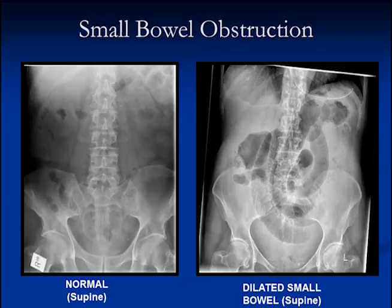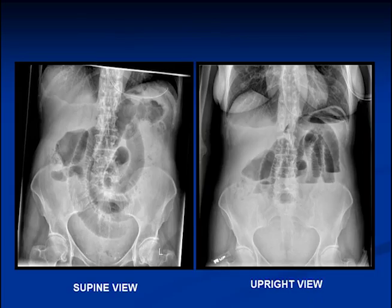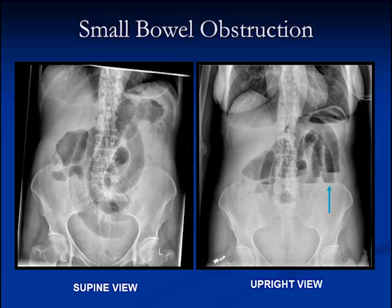Here's a normal supine view alongside one showing small bowel obstruction — you can see dilated small bowel in the mid-abdomen. If you look carefully, the mucosal folds go all the way across the bowel, indicating this is small bowel — these are plica semicircularis. On the upright view, we see definite air-fluid levels, which always occur in a small bowel obstruction.